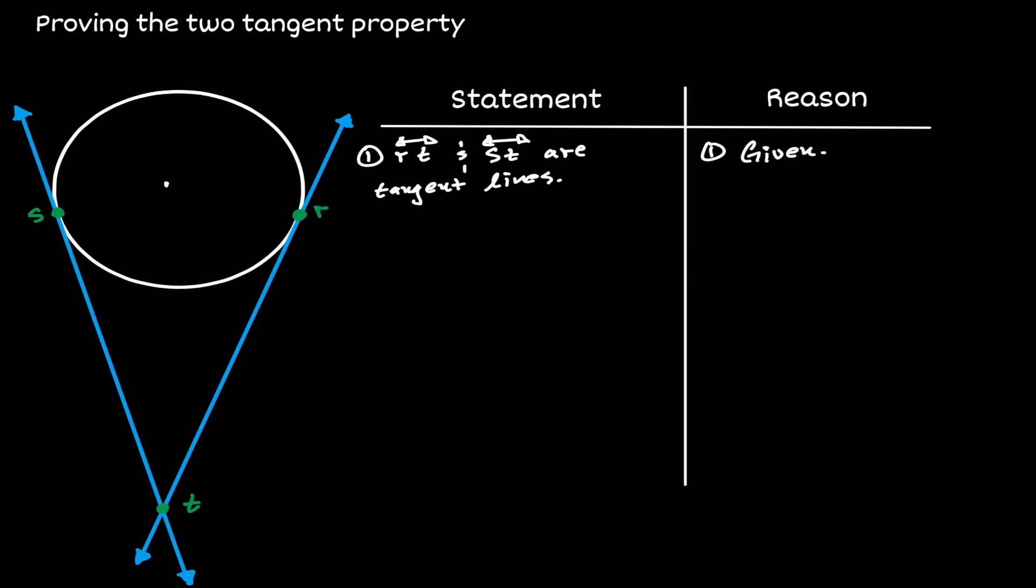If we consider the center of our circle, let's call it C. We have mentioned before that the radius towards the point of tangency is always perpendicular. So the same scenario if we connect C to R.